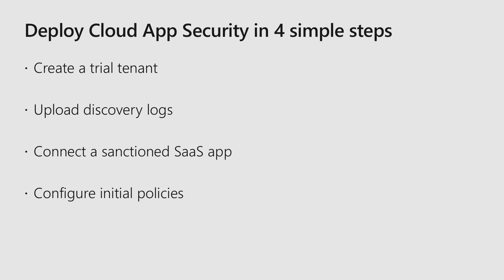The last step is the configuration of policies. By default, when you enable Cloud App Security, it gives you 10 built-in policies as part of your configuration, which cover things like anomaly behavior of users, mass download of data, user sign-in from a risky location, unexpected travel for the user, and all these types of activities.